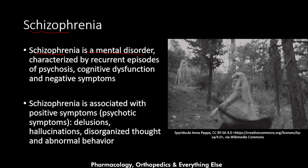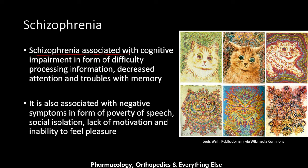Schizophrenia is an actual mental disorder, while psychosis is a set of symptoms. Schizophrenia is characterized by recurrent episodes of psychosis, along with cognitive dysfunction and negative symptoms. The psychotic symptoms in schizophrenia are called positive symptoms and include delusions, hallucinations, disorganized thoughts, and abnormal behavior. Schizophrenia is also associated with cognitive impairment in the form of difficulty processing information, decreased attention, and trouble with memory.